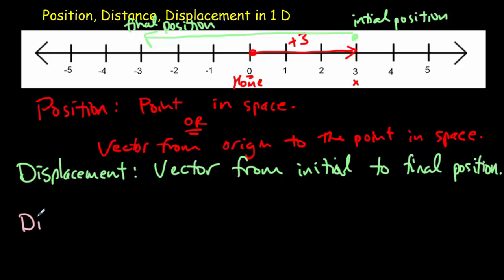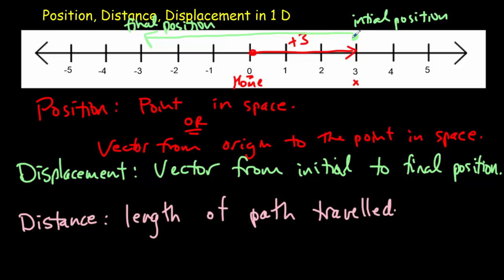Distance traveled is a little different — it doesn't include direction, it's just the length of the path traveled. Going from the initial position to the final position doesn't mean we took a direct path. We might have walked way up and then came back, so the distance moved could be ten units. Displacement tells us nothing about the path taken — only the distance tells us the path. Displacement is only based on the initial and final positions.